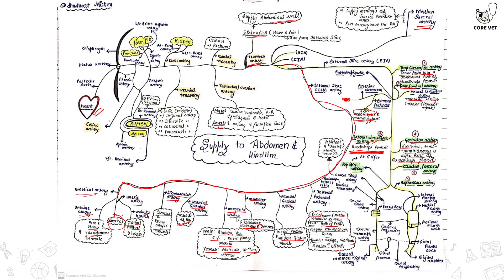Before reaching the stifle level, the femoral artery gives out the caudal femoral artery. After that it gives the saphenous artery as the last branch, and then continues as the popliteal artery at the level of the popliteal fossa. The saphenous artery continues on the plantar surface and descends, dividing into the lateral and medial plantar arteries. These plantar arteries anastomose with each other through a perforating branch known as the proximal plantar arch.